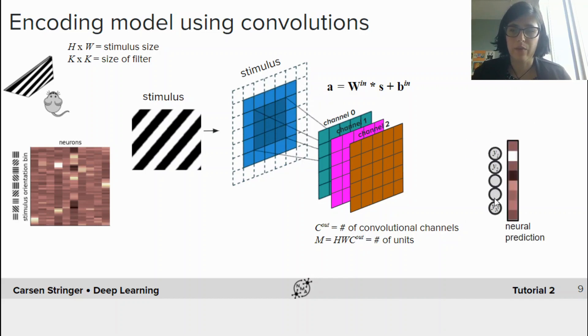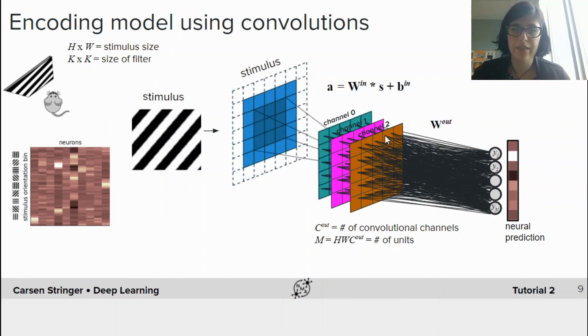We want to add a hidden layer here which takes as input the output of this convolutional operation and predicts our neural responses here, y. Y is a vector that's of size neurons and we have one vector for each stimulus. So we're going to create this fully connected layer which takes as input each of these different units and there's a weight from each of these units to each of these neurons. This is a linear layer like the one we implemented in tutorial 2.